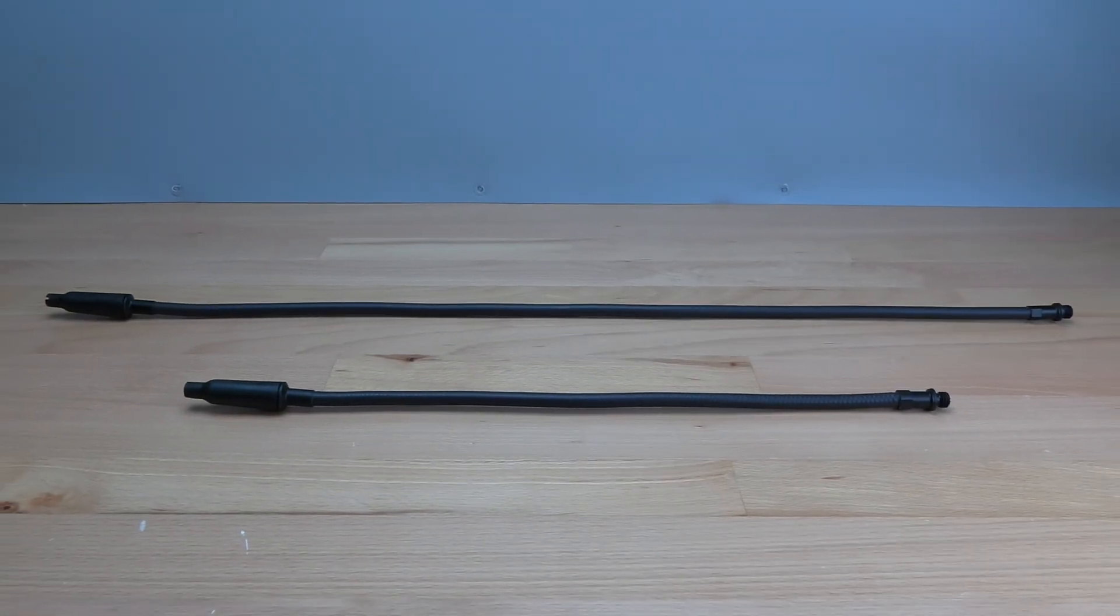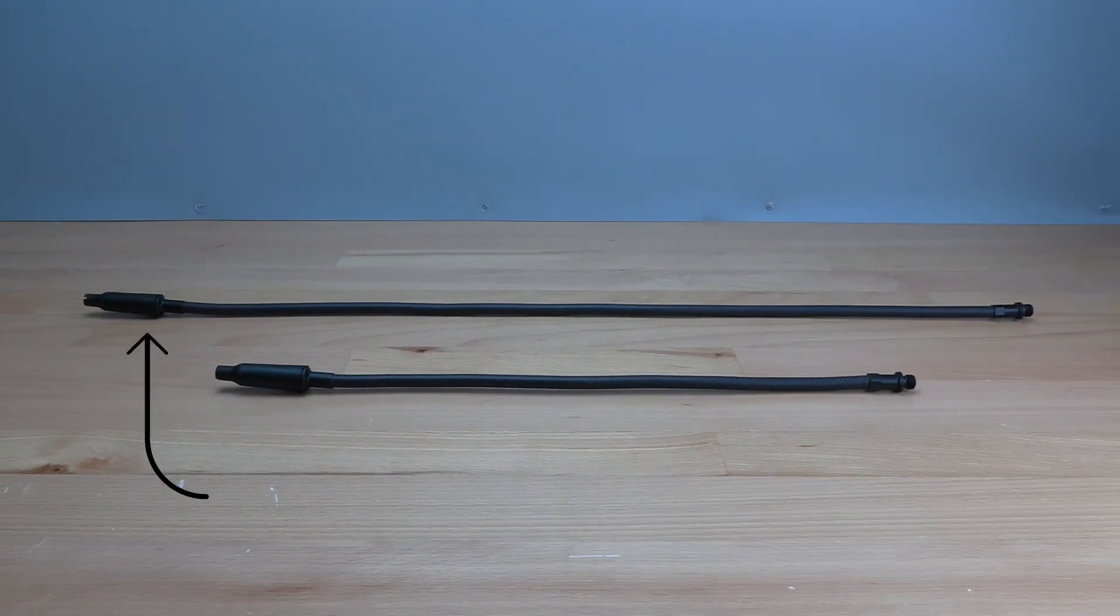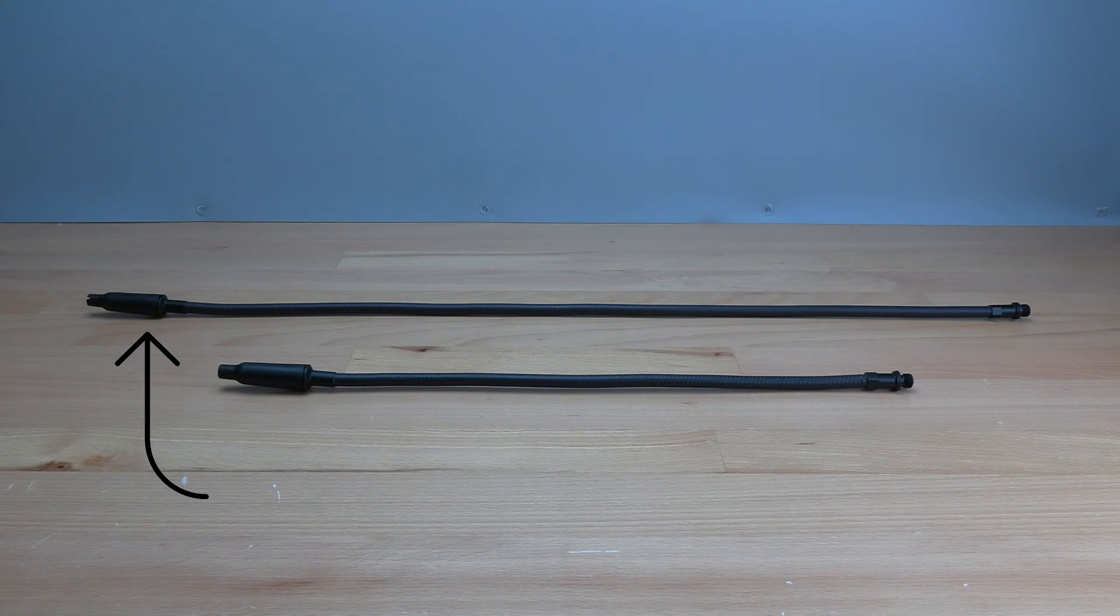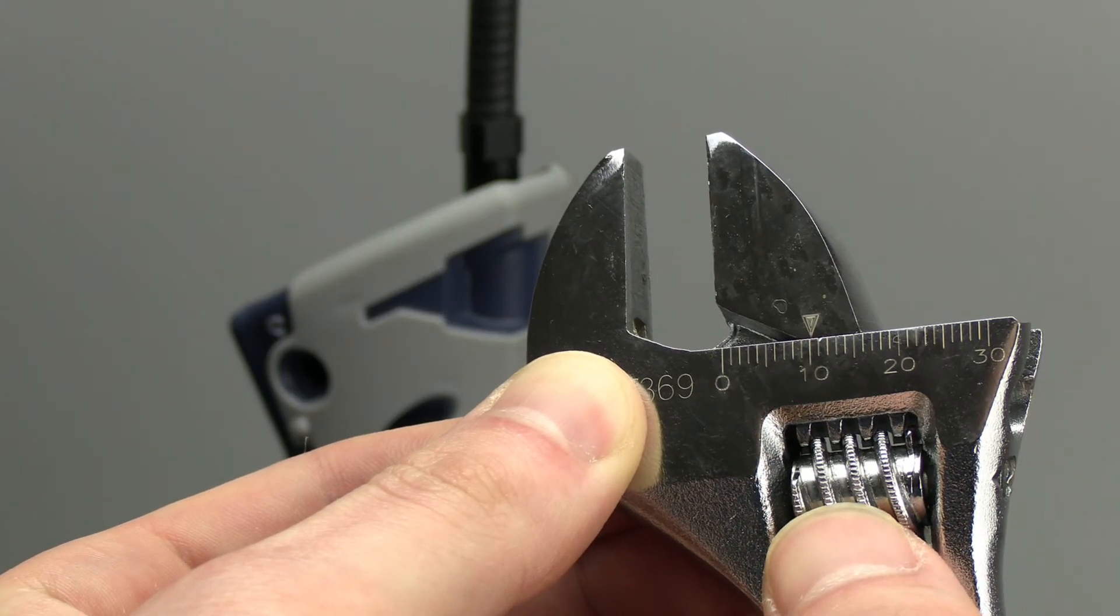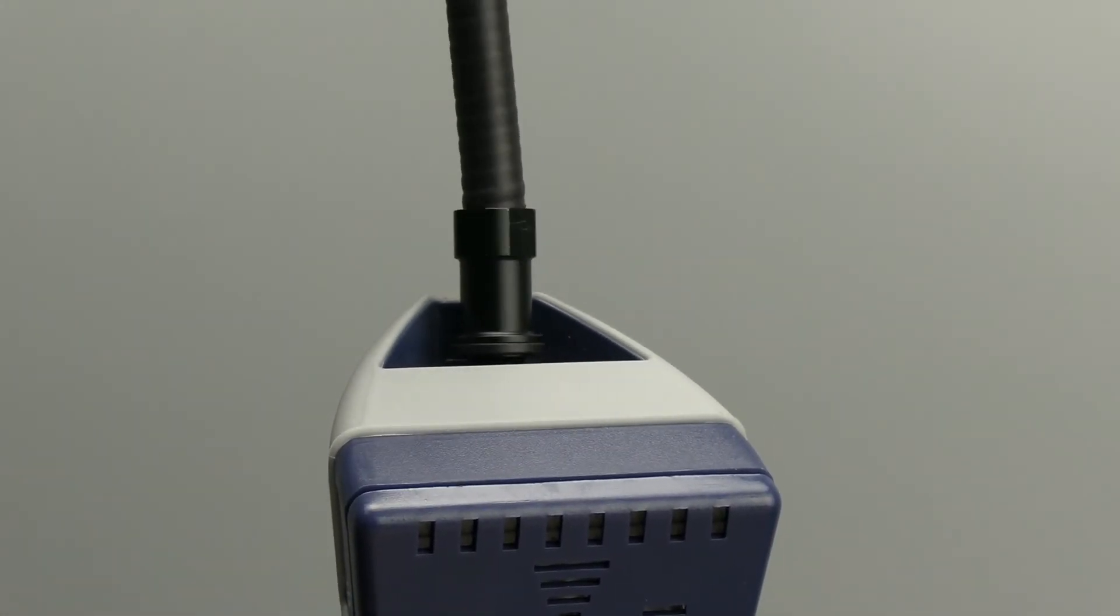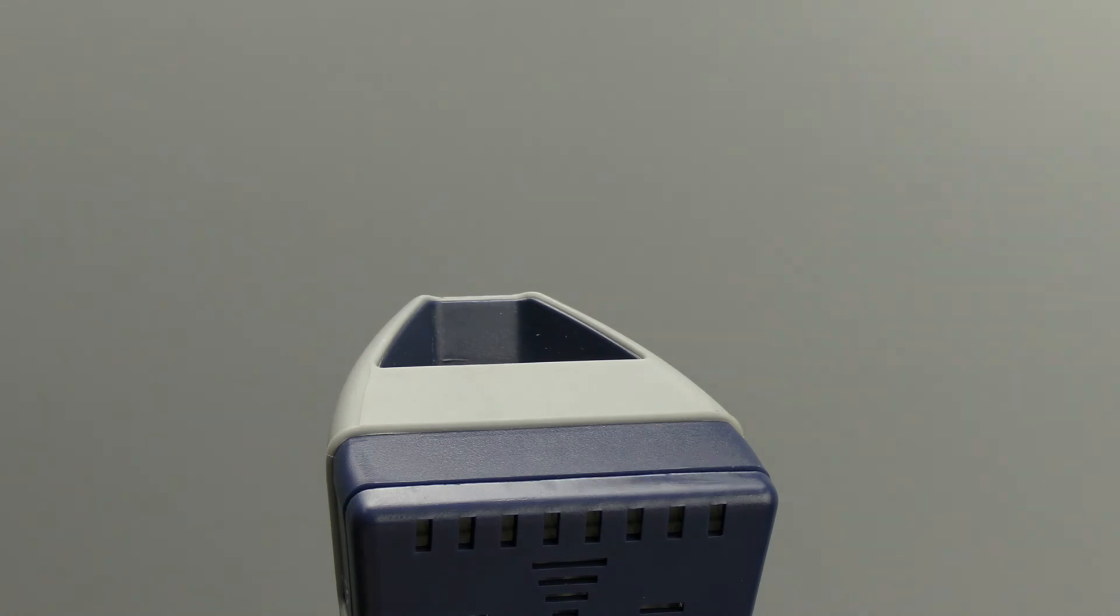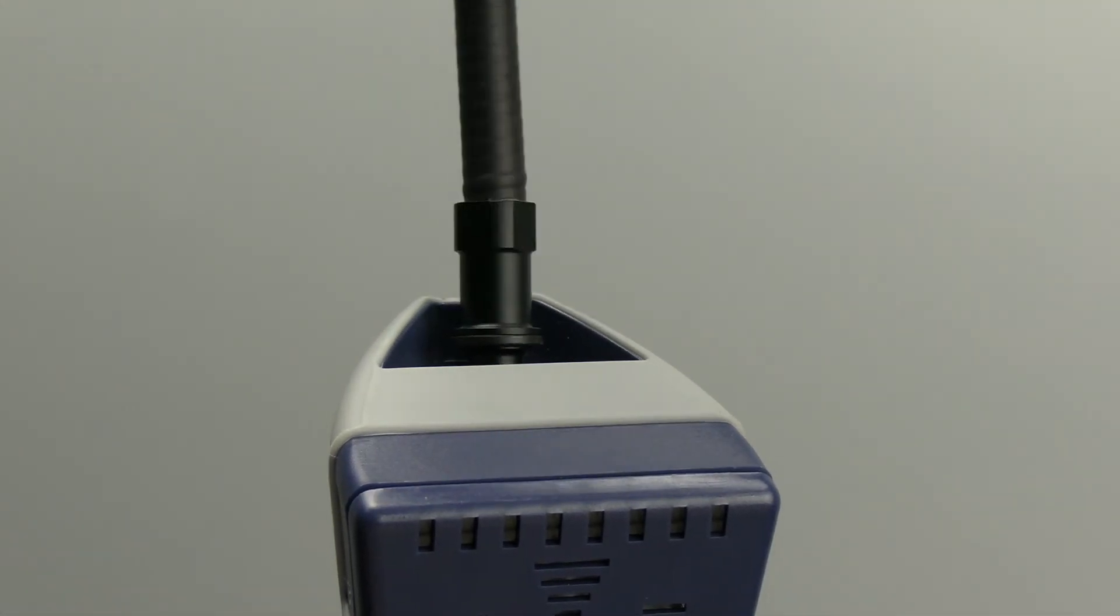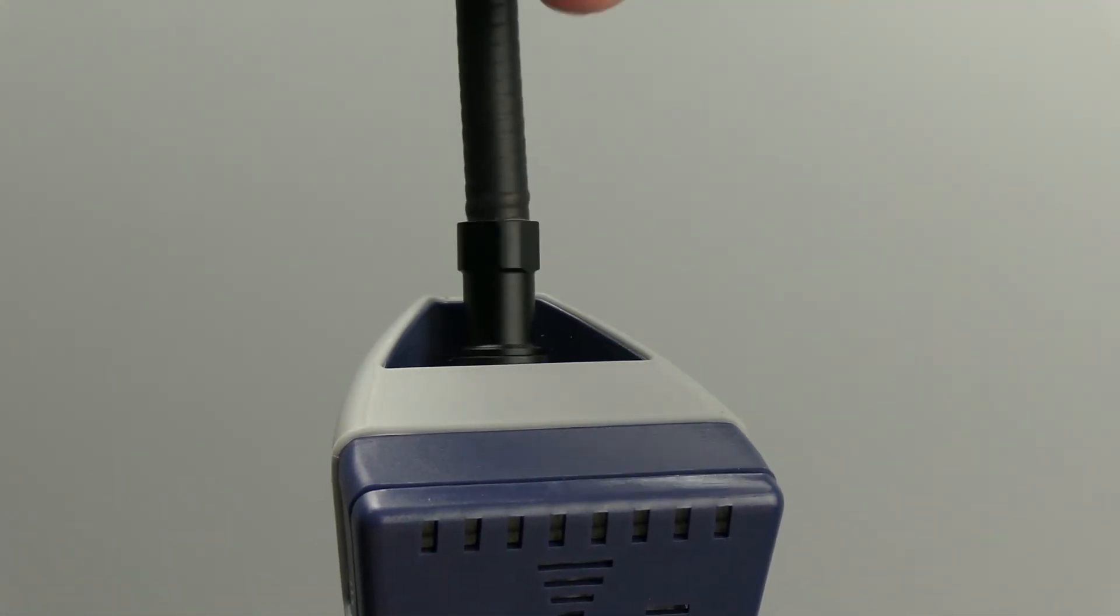The optional extra long probe can be used for those hard to reach places. To install the extra long probe, unscrew the original probe using a 10 millimeter wrench. Screw the extra long probe on and torque to about 35 inch pounds or 4 newton meters. Torque doesn't have to be exact, just make sure you don't over tighten it.